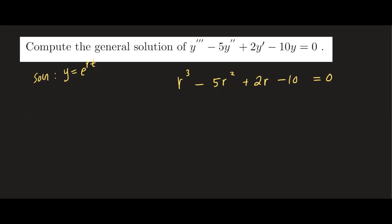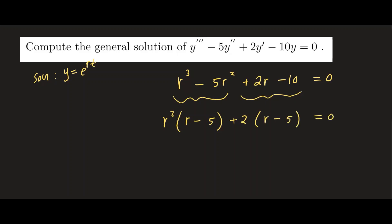We can try to factor this, or use any technique you're comfortable with for finding roots of a polynomial. This one is factorable using the method of grouping. From the first two terms, we pull out the common factor r squared to get r minus five. From the last two terms, we pull out positive two, giving r minus five equals zero. Both terms share r minus five, so we factor that out, leaving r squared plus two equals zero.